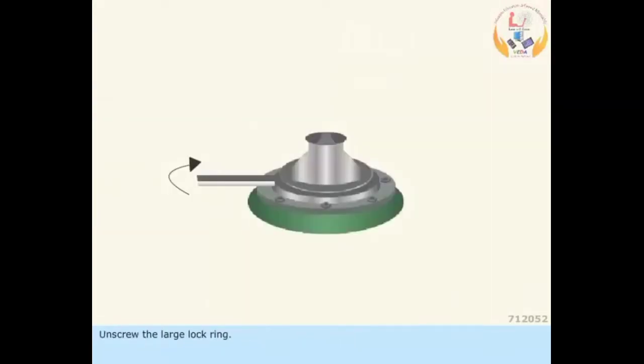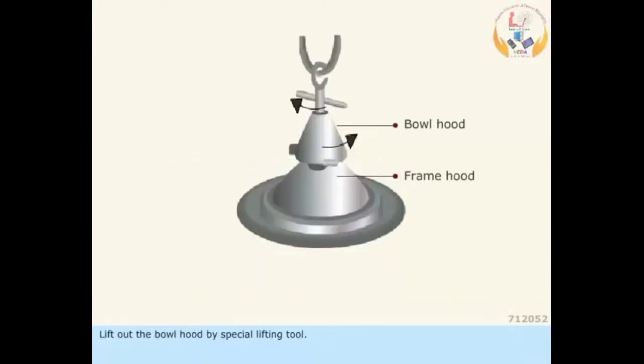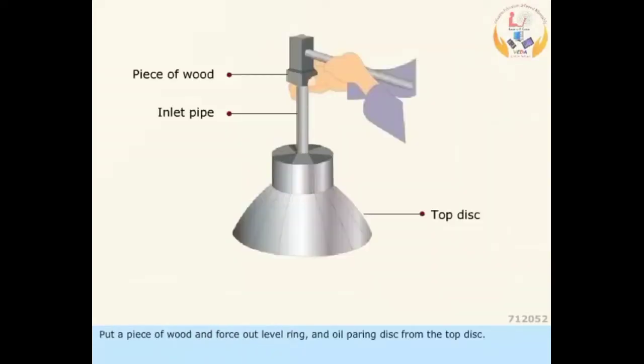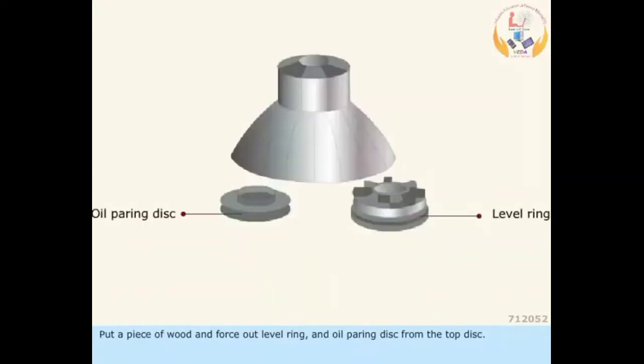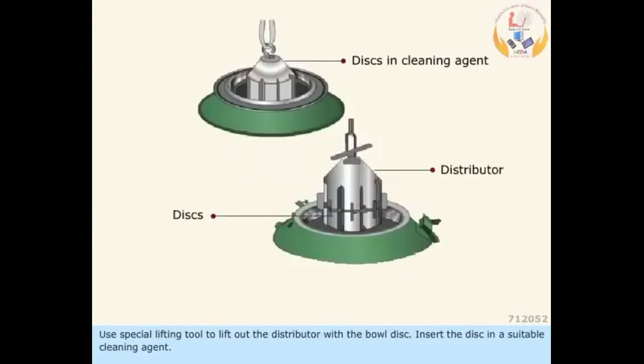Unscrew the large lock ring. Lift out the bowl hood using a special lifting tool. Put a piece of wood and force out the level ring and oil pairing disc from the top disc. Use a special lifting tool to lift out the distributor with the bowl disc.